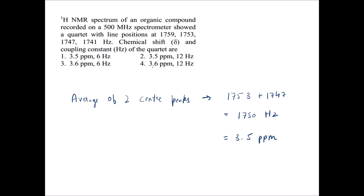The next question: a proton NMR spectrum recorded on a 500 MHz spectrometer shows a quartet with four lines at 1741, 1747, 1753, and 1759 Hz. The chemical shift value is the average of the center peaks — 1753 and 1747 — which gives 1750 Hz. It's a 500 MHz instrument, so 0 to 1 ppm is 500 Hz, 1 to 2 ppm is another 500 Hz.